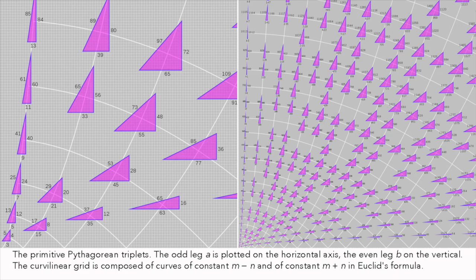For example, 6, 8, 10, and 9, 12, 15 are Pythagorean triplets, but aren't primitive ones.